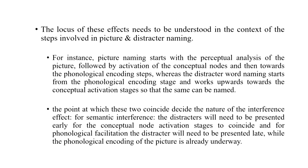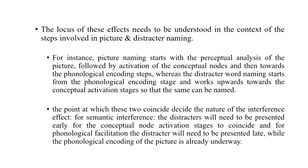To summarize: for semantic interference, you need to present the distractor word slightly earlier than the picture so that the meaning encoding of the distractor coincides with the meaning encoding of the picture. For phonological facilitation, you need to present the distractor slightly later so that the phonological encoding of the distractor coincides with the phonological encoding of the picture. Picture naming starts with perceptual analysis, then activation of conceptual nodes, then phonological encoding, whereas distractor word reading starts from phonological encoding and moves upward toward conceptual activation — two processes moving in opposite directions — and the point at which they coincide determines the nature of the interference effect.